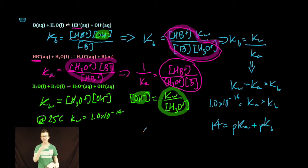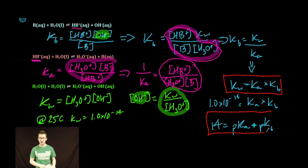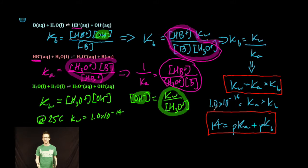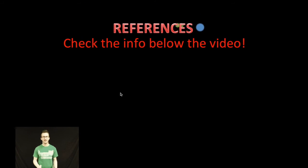If all the math and substitution is confusing, just focus on and recognize that Kw equals Ka times Kb and 14 equals pKa plus pKb are the important relationships between Ka, Kb, and Kw. You'll get these two equations on the formula chart and can use basic algebra to solve for different variables. And that does it for this video — have a fantastic day!